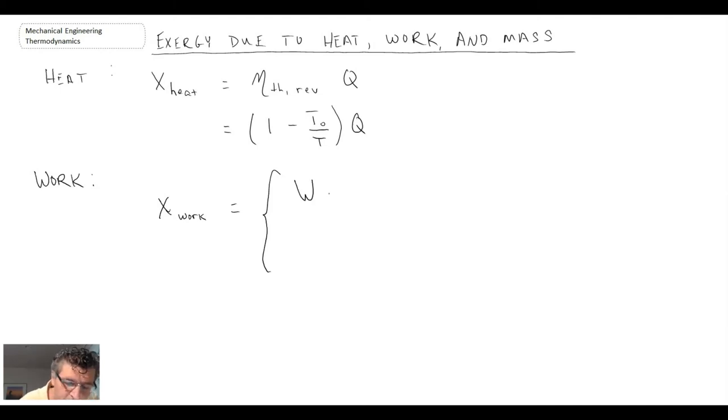For work, we have work minus work surroundings. Recalling that is nothing more than the volume change of our boundary multiplied by the local dead state pressure, typically atmospheric 101.325. So that is if you have boundary work.